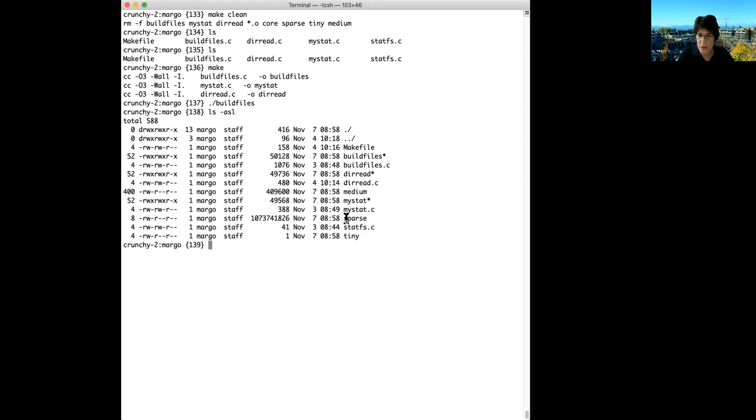We have a medium sized file, which is 409600. We allocated about 100 4k blocks, so we get 400 allocation units. Now the more interesting one is sparse. Sparse looks like this enormous file. But notice that we've only allocated eight blocks to it because it is, in fact, a sparse file.